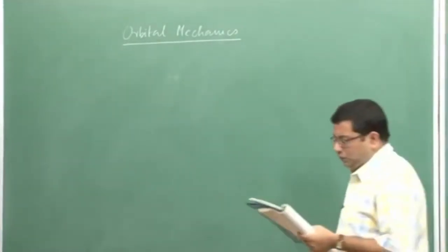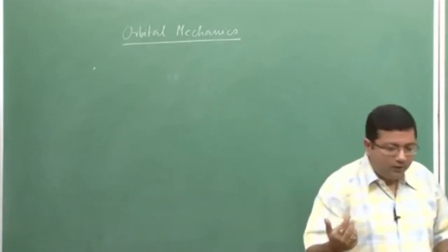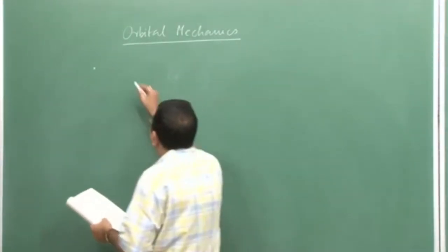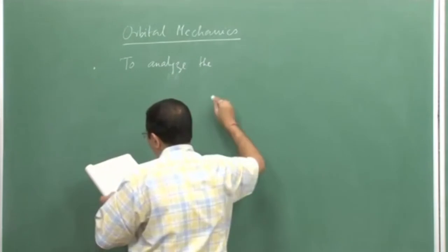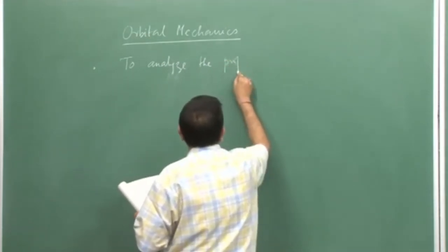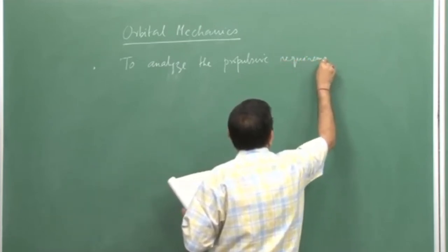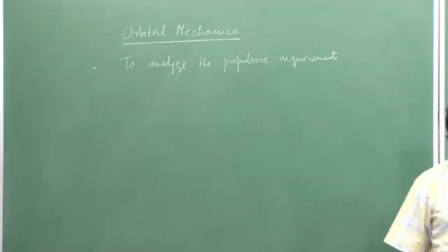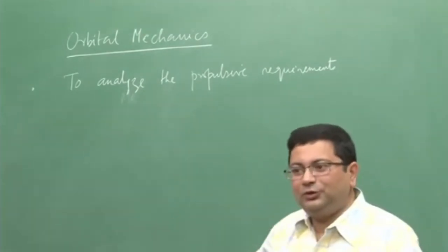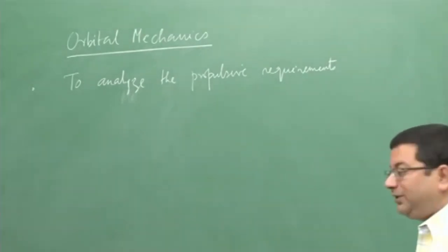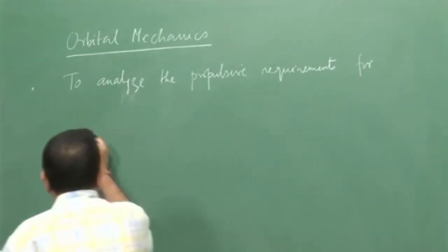The knowledge we will gain from this discussion is essentially to find out how much velocity we should provide to the vehicle if it has to take up a specified orbit — that is the whole crux of this discussion. So with this background, let us talk about orbital mechanics. What is the goal of orbital mechanics? We want to analyze the propulsive requirements for orbital transfers.